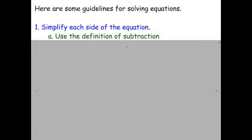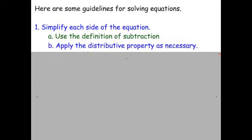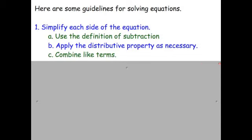In order to simplify, we first use the definition of subtraction, where we rewrite all subtractions as adding the opposite. Then, if we need to, we apply the distributive property as necessary, and the third thing we do when we're simplifying is to combine the like terms.